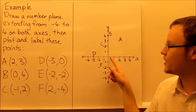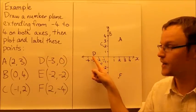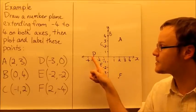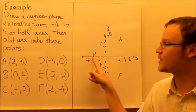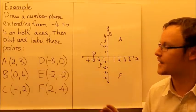D, (-3,0), so we move negative 3 down the horizontal plane, the horizontal axis, and then zero up or down, so we stay on the x-axis. So our point here, D, is on the x-axis.